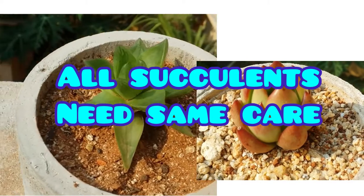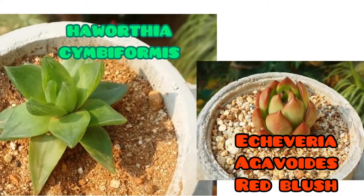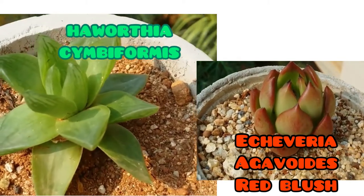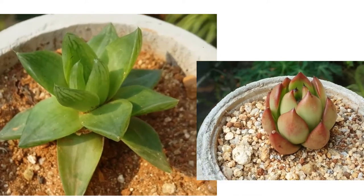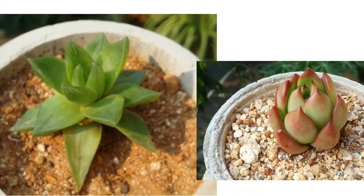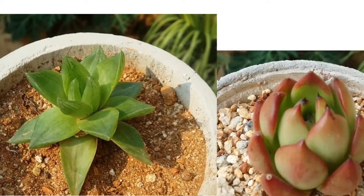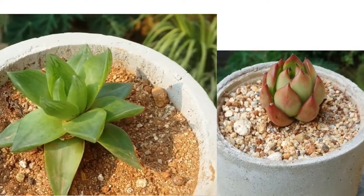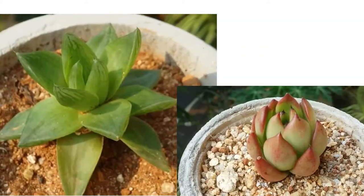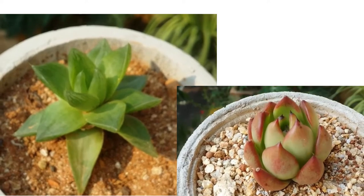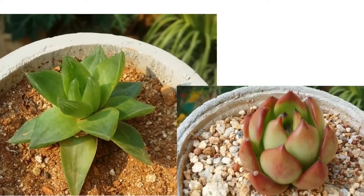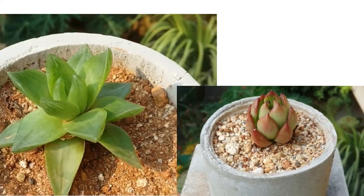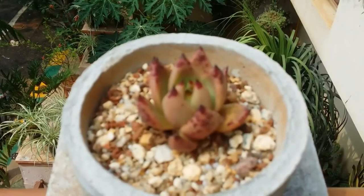The sixth misconception is that all succulents need the same care. That's completely incorrect. On my left I have my Haworthia and on my right my Echeveria. Haworthias enjoy indirect sunlight and do not like direct sunlight, whereas Echeverias like full morning direct sunlight. Haworthias also prefer slightly more watering compared to Echeverias. A very important difference is their dormant period: Haworthias go dormant during summer, while Echeverias go dormant during winter.